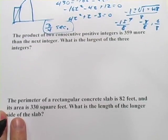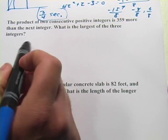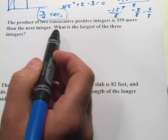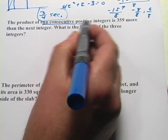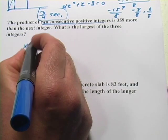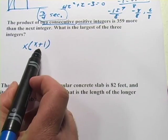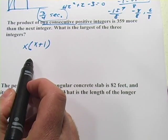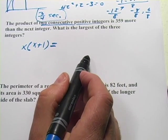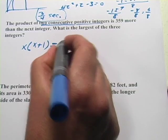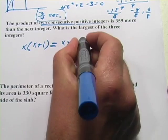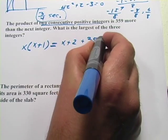All right, let's try the next one. This one says the product of 2 consecutive positive integers is 359. So 2 consecutive positive integers. So that would be x, and this is the product, so we'd multiply them, times x + 1. x + 1 makes that the next consecutive integer. It says, is 359 more than the next integer? Well, the next integer would be x + 2. And it's 359 more than that. So we could add 359 onto here.